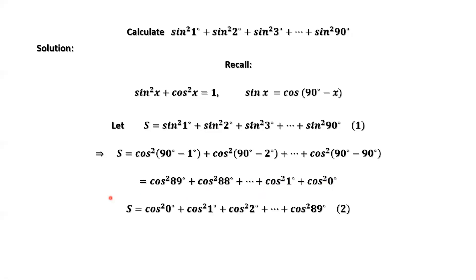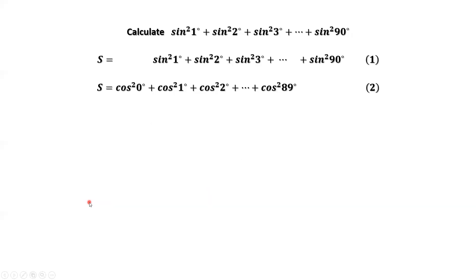We rewrite this part in the backward order and summarize the two results. Both are S. S has two different expressions: the first one in terms of sine, and the second one in terms of cosine. Now we are going to use the result sine squared of x plus cosine squared of x equals one.